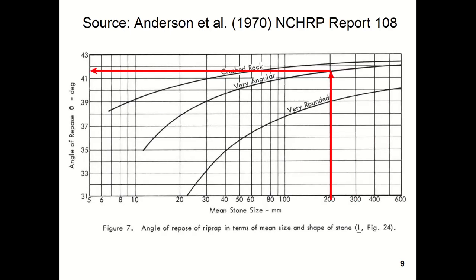So the first thing would be to use figure 7 in the NCHRP report 108. If you look at figure 7, it gives you a mean stone size, which would be the D₅₀. So you'll come up from the size of the stone that you have. So you notice here at 200 millimeters, I've drawn a vertical arrow.